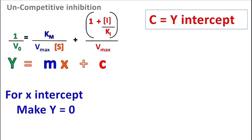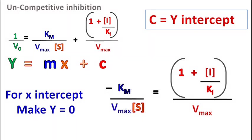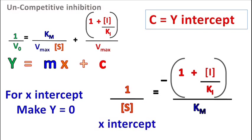Now to find the X-intercept, let's take 1 by V0 is equal to 0 in the above equation. So the equation becomes minus Km upon Vmax into S is equal to (1 plus I upon Ki) upon Vmax. Rearranging the equation, we get the value of the X-intercept which is equal to minus (1 plus I upon Ki) upon Km.